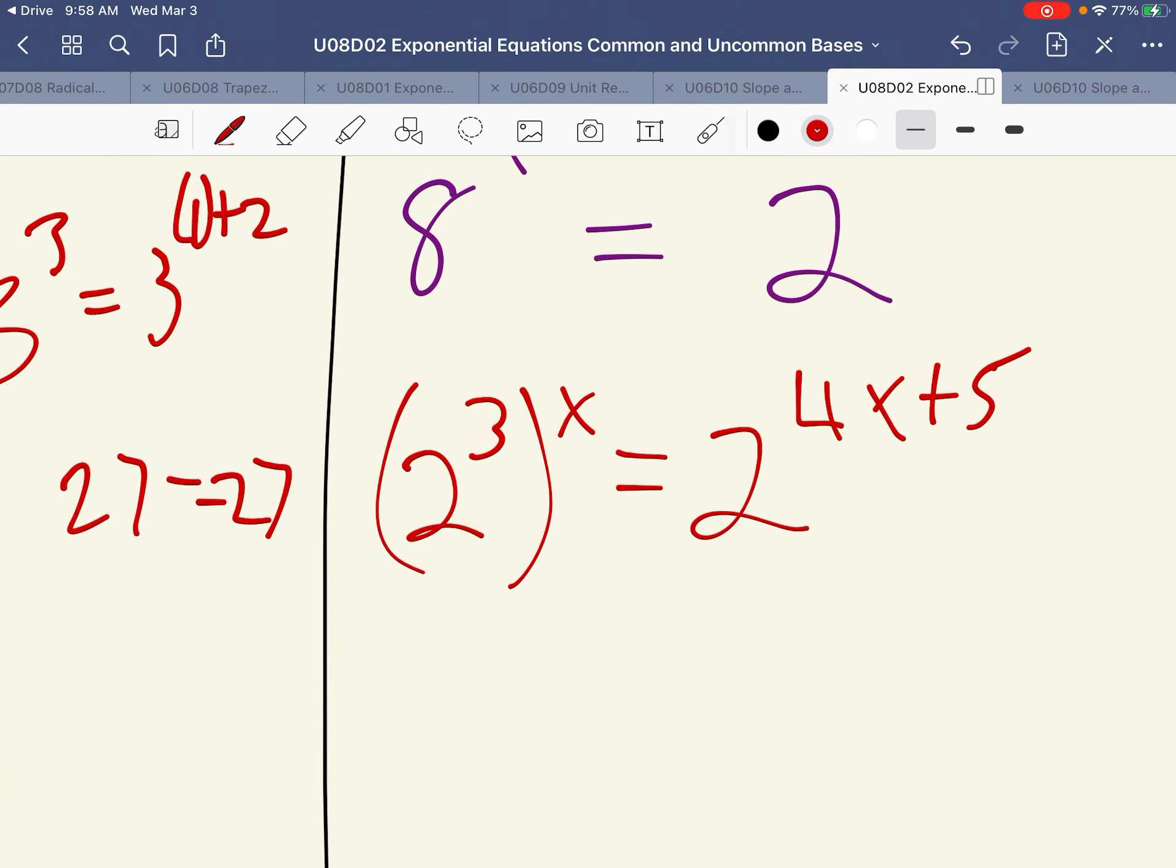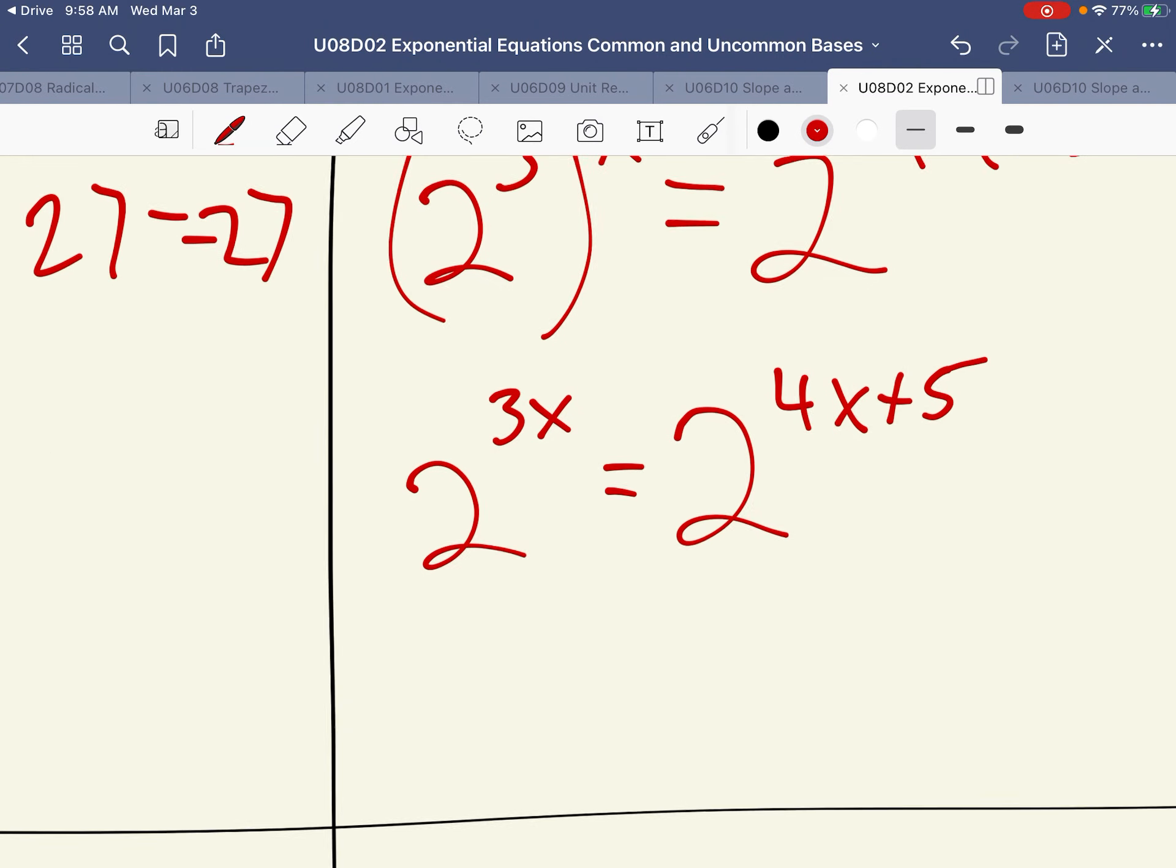Now, by the power rule of exponents, we can rewrite this as 2 to the 3x is equal to 2 to the 4x plus 5. And now we can set the exponents equal to each other. So we've found a common base of 2, which changed the exponent, and now we can solve for the exponent like we did a moment ago. So 3x is equal to 4x plus 5. We should get that x is equal to negative 5.